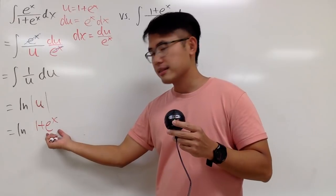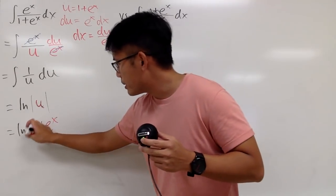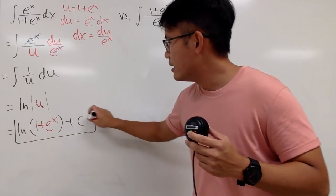And because e^x is always positive, and when you add one to it, it's still always positive. So I will just put the parentheses around it, and then in the end, I put down the plus C. And this is it.